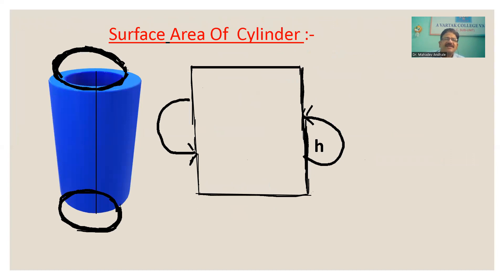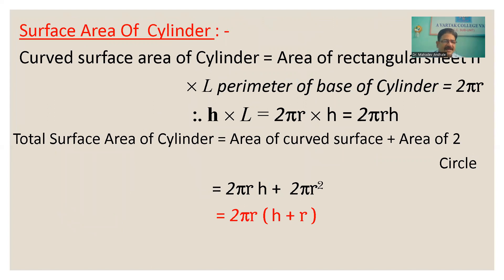For the surface area of the cylinder, take a simple piece of paper and roll it to form the shape of a cylinder. Using that diagram, find the surface area. The area of the rectangular sheet is H × L, where L equals the perimeter of the base, which is 2πr. So H × L = 2πrh. The total surface area of the cylinder equals the curved surface area plus the area of two circles: 2πrh + 2πr², which simplifies to 2πr(h + r).